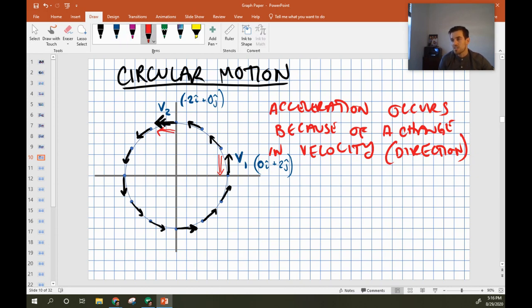So if I draw that vector, it has to look like this. It would be a vector that looks like this, approximately. Where it's losing 2 in the horizontal, and gaining 2 in the... sorry, losing 2 in the vertical, gaining 2 in the horizontal.